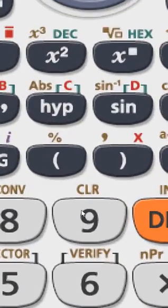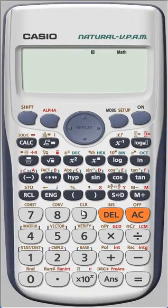We can see CLR is written. CLR means clear. Let's press number 9 with the shift key - shift and then number 9.